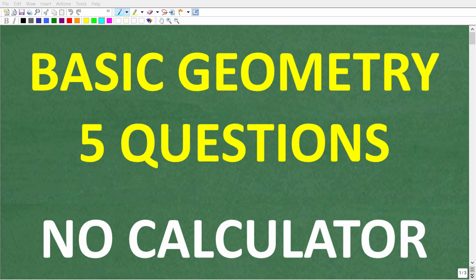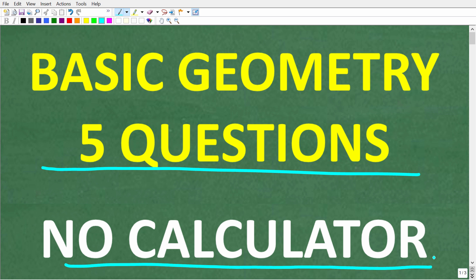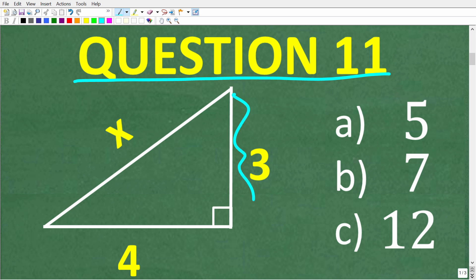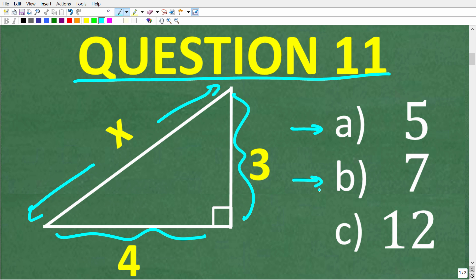Let's start the final section of this quiz — 5 basic geometry questions, no calculators. Question 11: given a triangle with lengths 3, 4, and x, what is the length of x? Is it A, 5; B, 7; or C, 12?